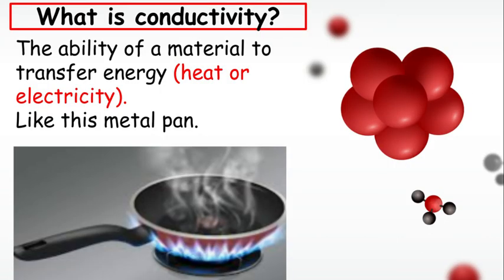What is conductivity? It's the ability of a material to transfer energy like heat or electricity. Like this metal pan. You see the fire underneath and there's water inside the pan. That fire heats up the metal, which is very conductive. And it conducts the energy from the fire into the water, which causes evaporation. That is the complete transference of energy from the fire to the pan, to the water, and to the vapor.